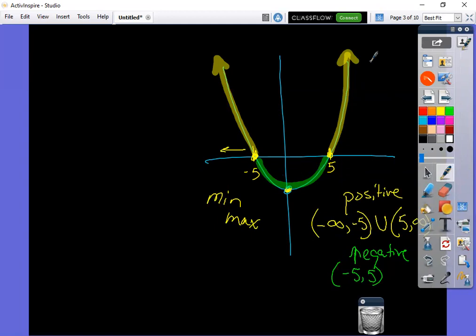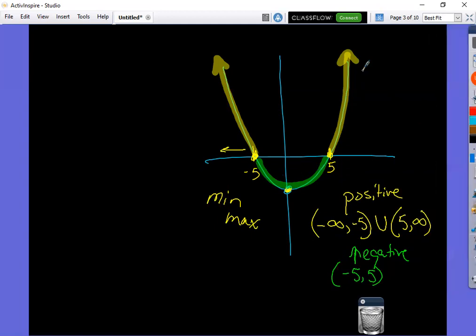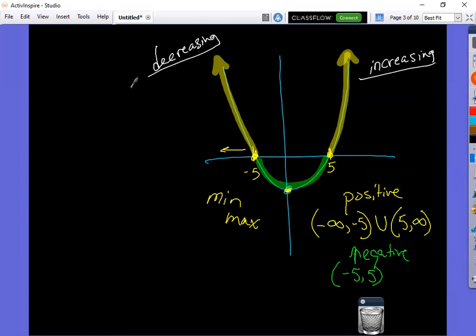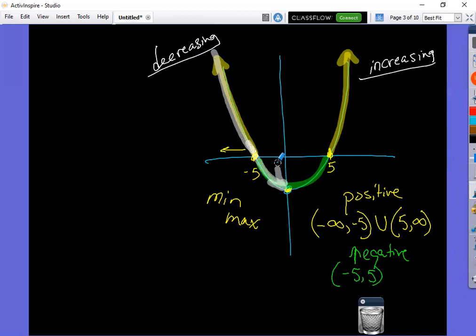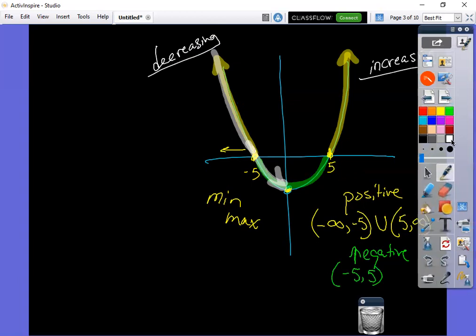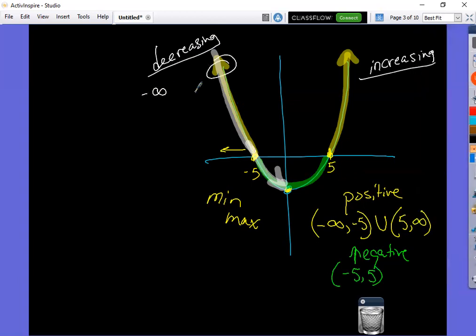Last concept that comes up sometimes is I say where is the graph increasing or where is it decreasing? And what you use for that is if you go from left to right, like you're reading a sentence. On this graph, when I went left to right, I would be going down. So on the left side here, from my negative infinity, because that goes on forever, up until I hit the five, that would actually be decreasing.